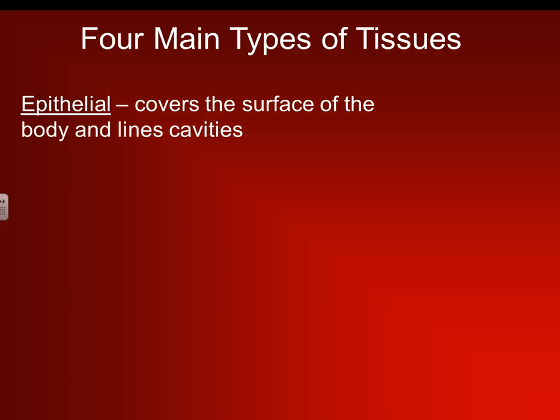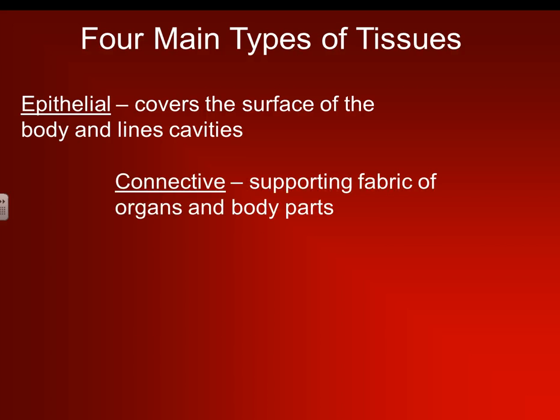Alright, we have four main types of tissue. The first one is epithelial — they cover the surface of the body and line the cavities. The second one is connective tissue, the supporting fabric of the organs and body parts — so the fascia, tendons, ligaments, those kinds of things.